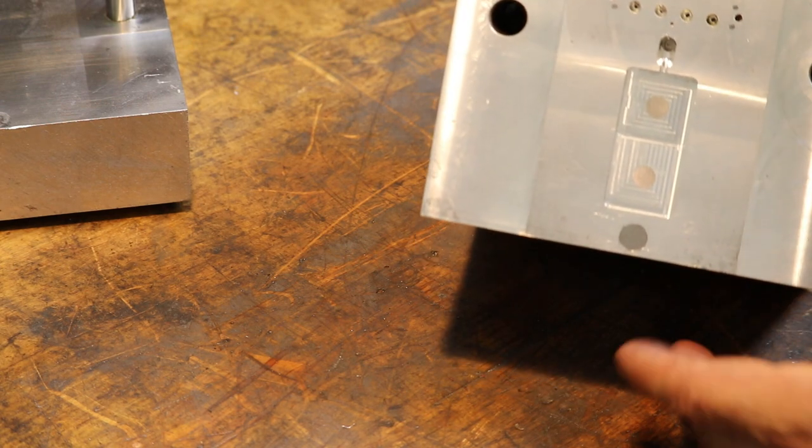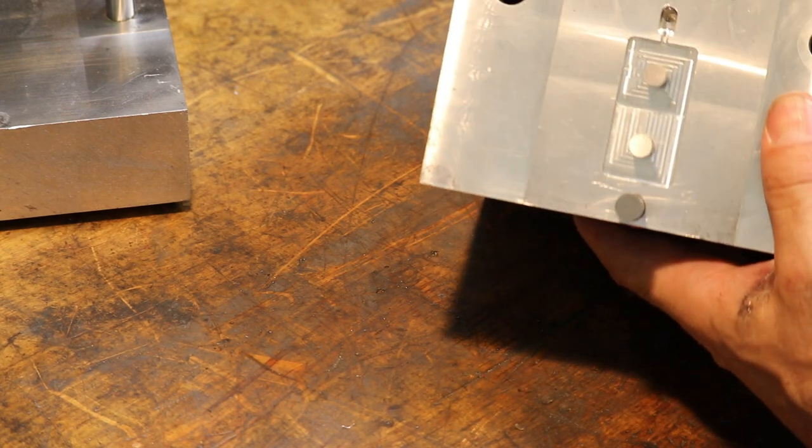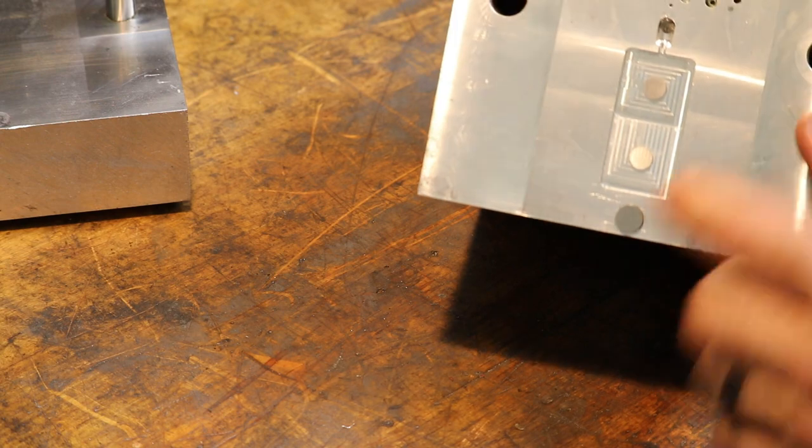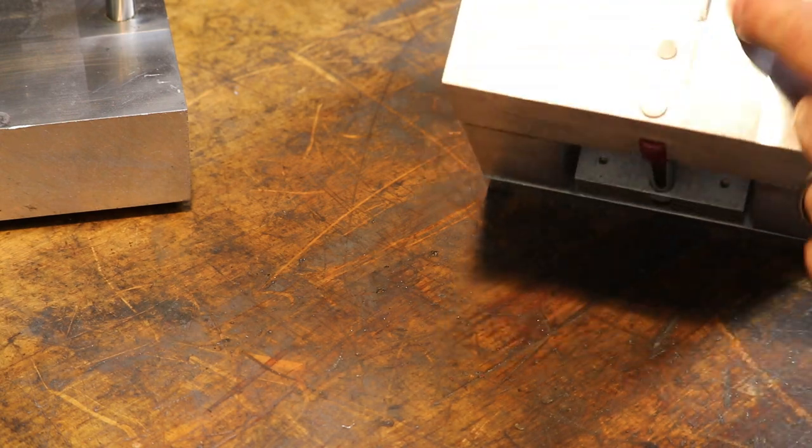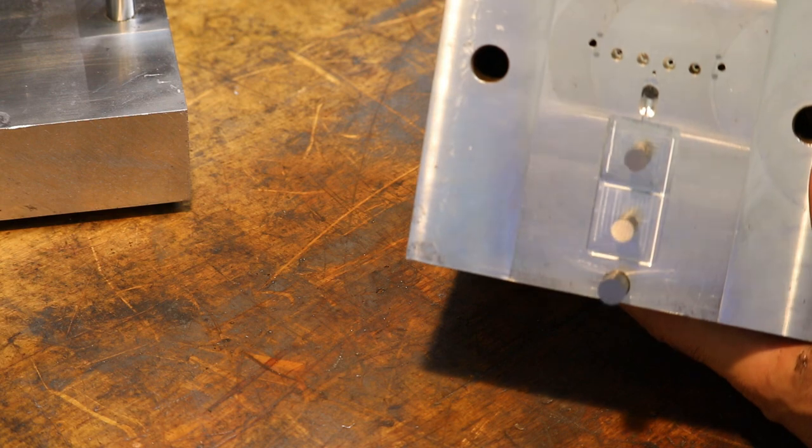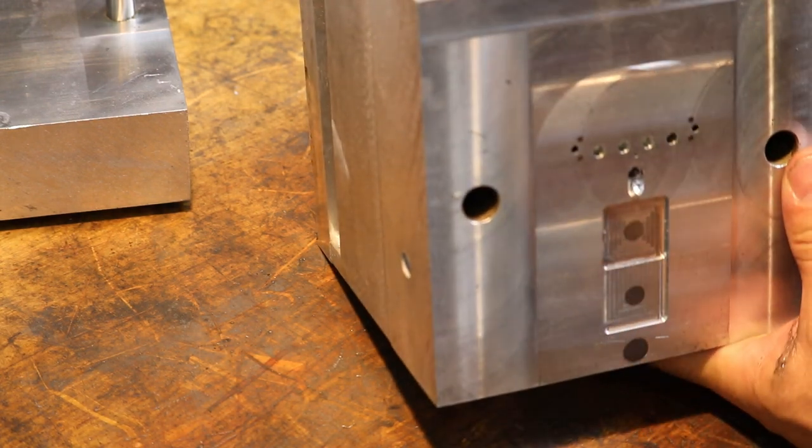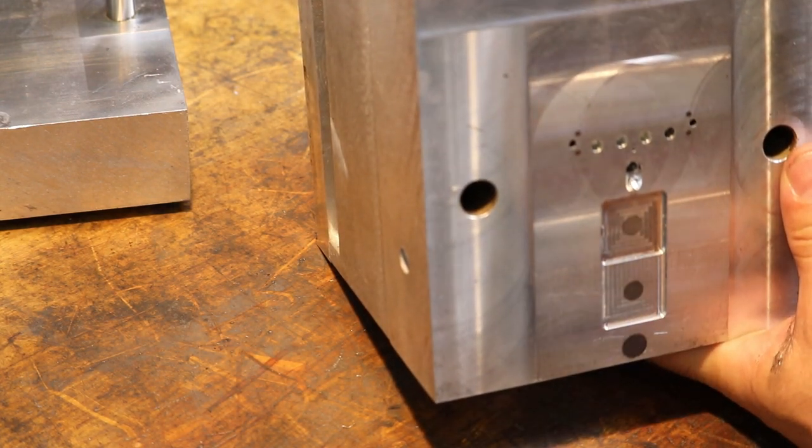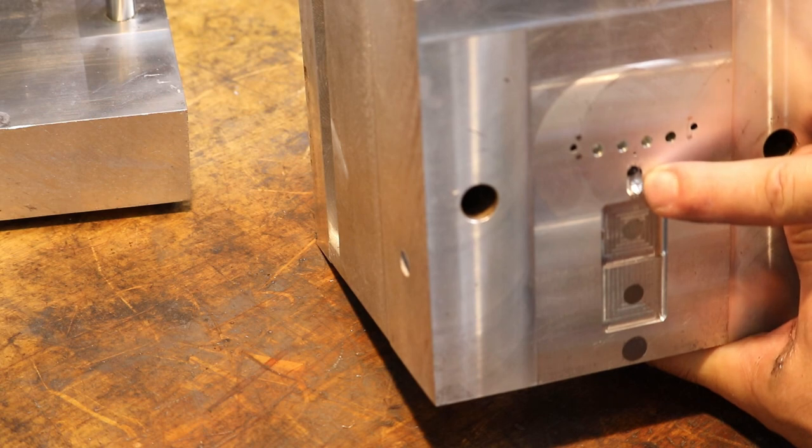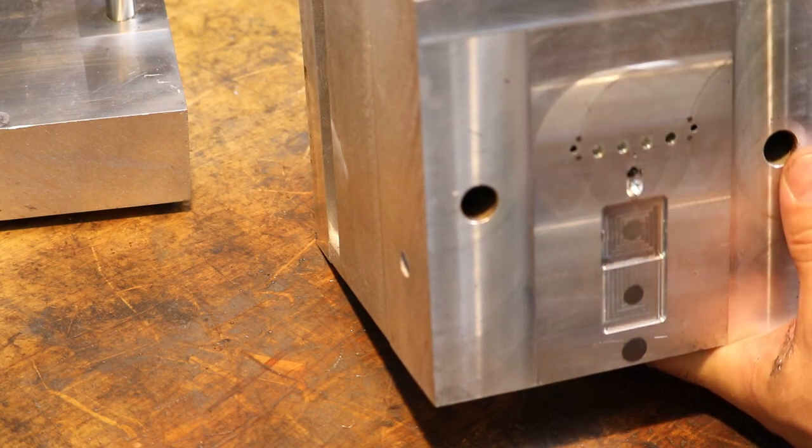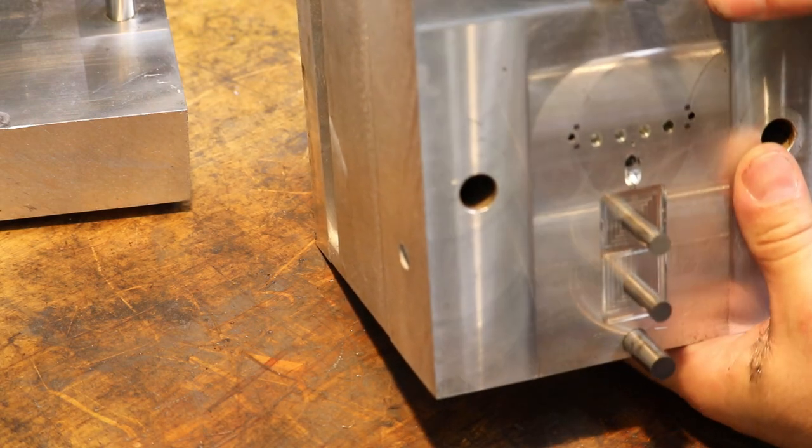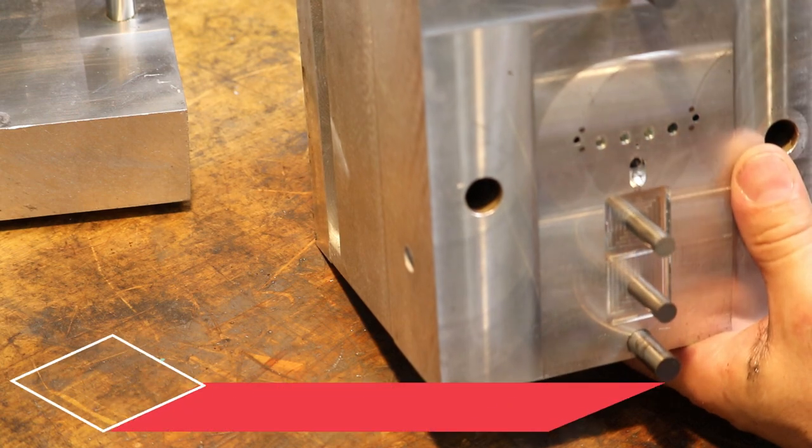Now what we're going to do is, there's two ejector pins that eject the coupon off of the B side. You can see how these ejector pins push in and out and the plastic squirts in. The ejector for the sprue is in this area which is not currently loaded into this mold.